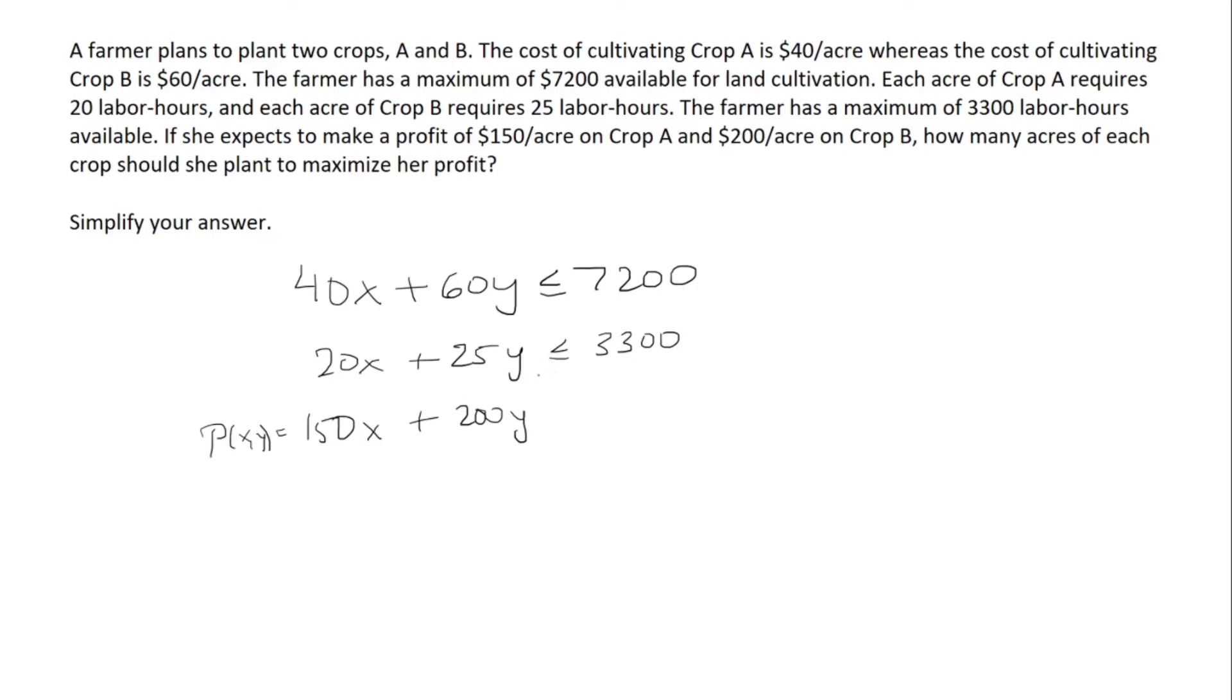So this is the profit function. We're given these two constraints and we want to find x and y to maximize the profit. We're going to graph this now. 40x plus 60y is less than or equal to 7,200. One thing we could do is divide everything by 20 to get 2x plus 3y is less than or equal to 360.